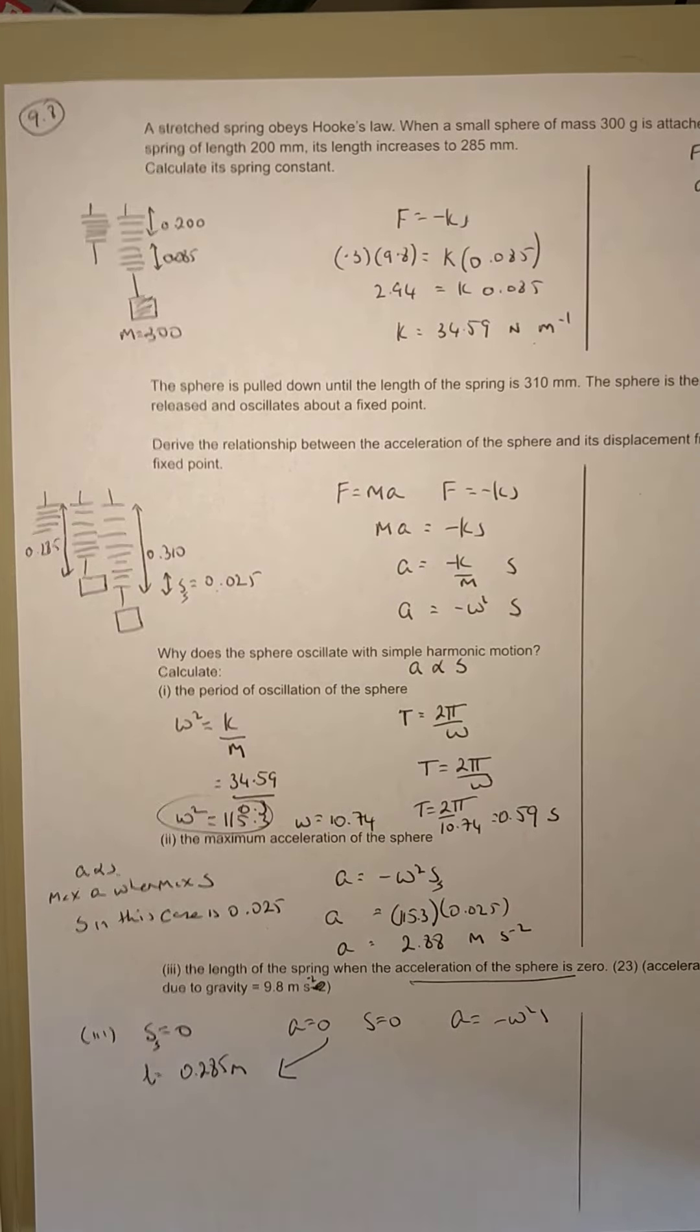s is zero, since a equals minus omega squared times s. Therefore the length is just 0.285, and that's it.